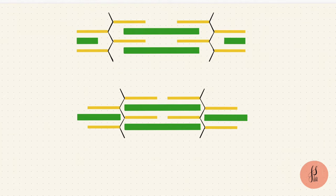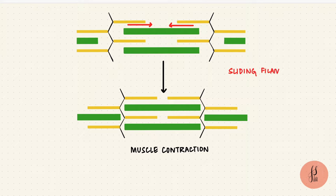During a muscle contraction this sarcomere shortens. That happens when the thin filaments slide over the thick filaments. That's the sliding filament theory.